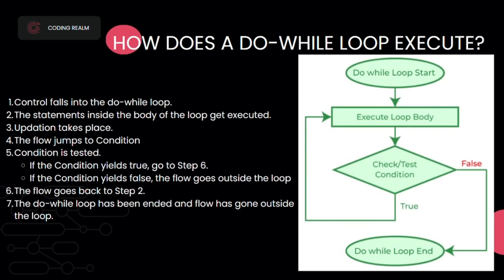Now let's see how the do-while loop works. First, we write 'do', the loop starts, the body executes, then we check the condition — if false, the do-while loop ends; if true, we go back to the body. Step one: control falls into the do-while loop. Step two: statements inside the body execute. Step three: updation takes place. Step four: flow jumps to condition — if true, go back to step two; if false, go outside the loop. Finally, the do-while loop has ended and flow has gone outside the loop.